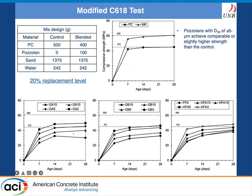The second test was the modified C618 test. A control mix was tested at different ages, and blended mixes containing ground glasses, harvested fly ash, and metakaolin were produced at a 20% replacement level. Metakaolin cubes showed significantly higher strength than the control mix even at seven days due to its high reactivity. Ground glasses and harvested fly ash show lower strength values at larger particle sizes — for example, 15 microns — but the strength increases over time as the pozzolanic reaction progresses. When these materials are ground to fine particles, such as around 3 microns, the strength values catch up to or exceed the control mix strength at 28 days.